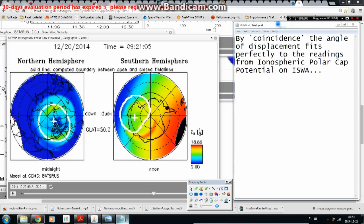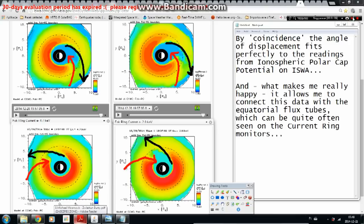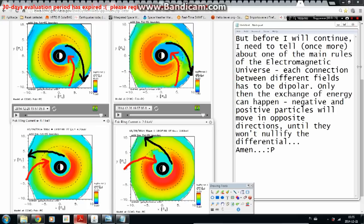By coincidence the angle of displacement fits perfectly to the readings from ionospheric polar cap potential on ISWA. And what makes me really happy it allows me to connect this data with the equatorial flux tubes which can be quite often seen on the current ring monitors. But before I will continue I need to tell once more about one of the main rules of the electromagnetic universe.